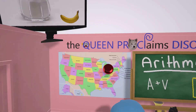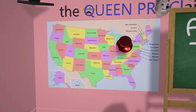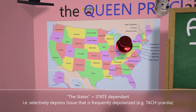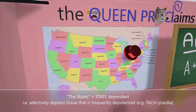We notice a picture of the United States, which reminds us that class 1A anti-arrhythmics are state-dependent — meaning they bind to cardiac tissue that's depolarizing a lot. They're more effective when the arrhythmia is severe, such as in abnormally overactive parts of the heart. That's why we have this thumb tack to remind us of tachycardia: there will be selective depression of tissue that is frequently depolarized, such as in tachycardia.